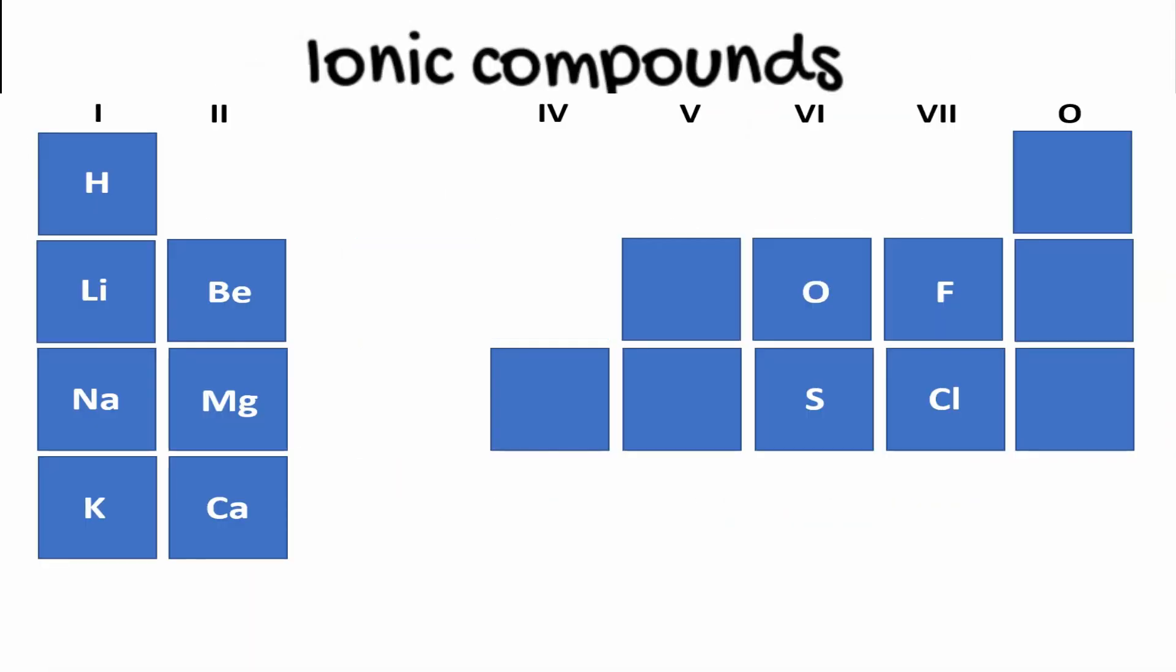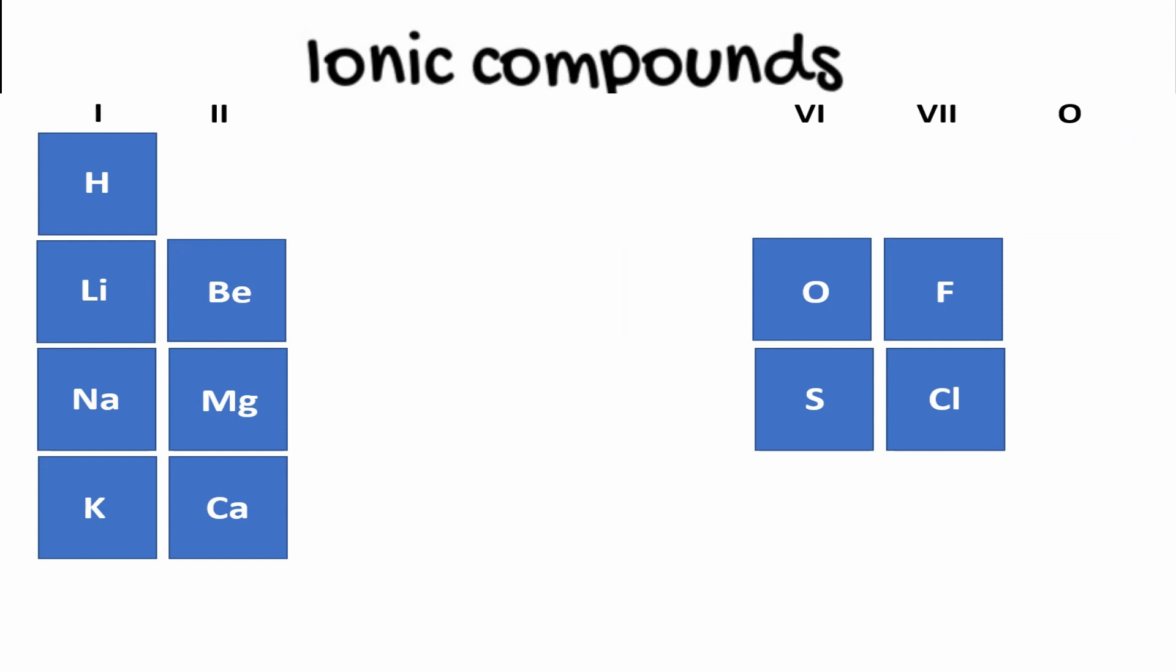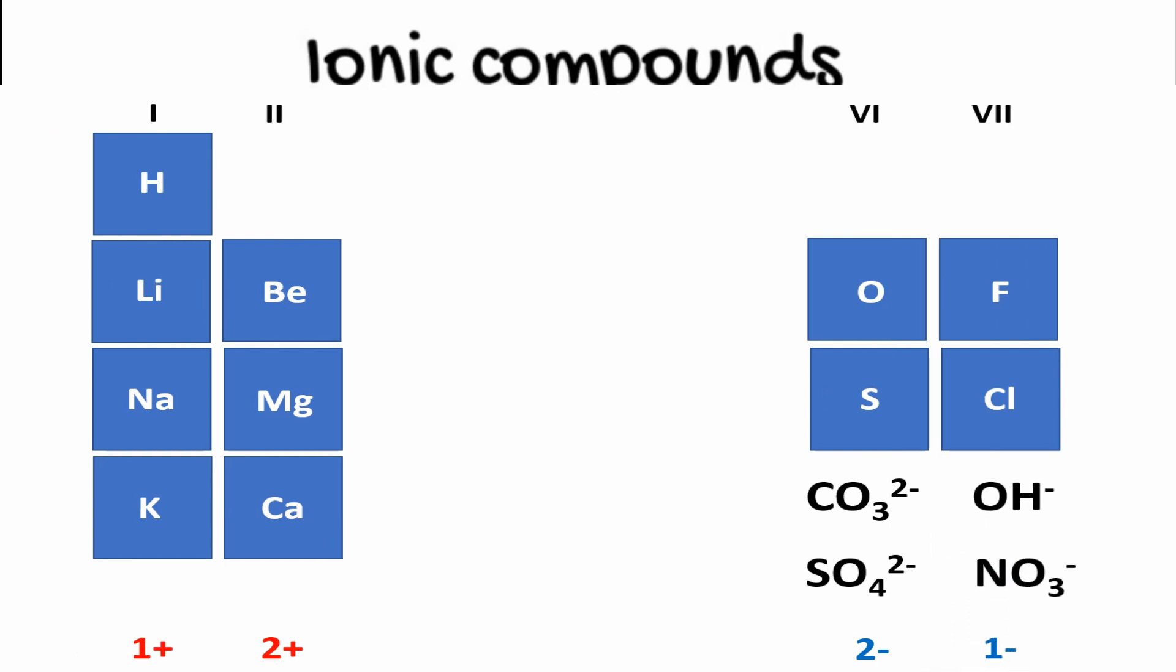Looking just at groups 1, 2, 6, and 7: Group 1 elements with their single outer shell electron form 1+ positive ions. Group 2 forms 2+. Group 6 forms 2-. Group 7 forms 1-. There are a number of other endings you need to know: CO3 2-, SO4 2-, OH-, and NO3-.